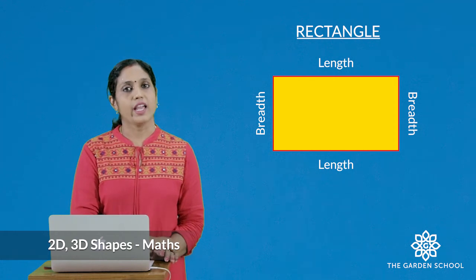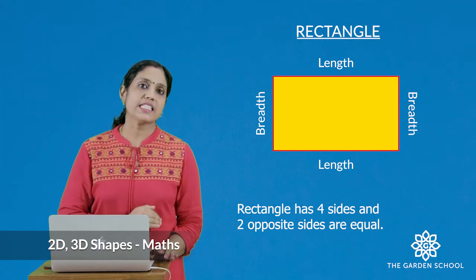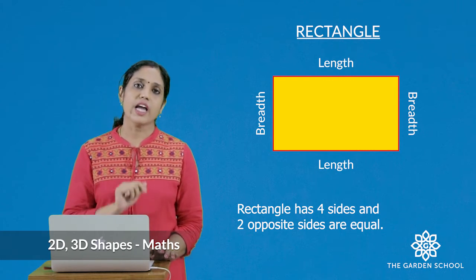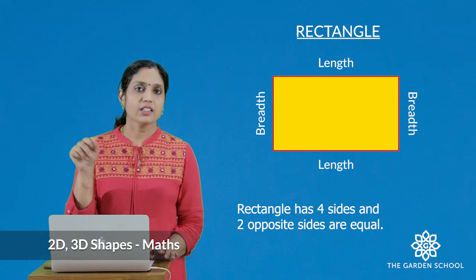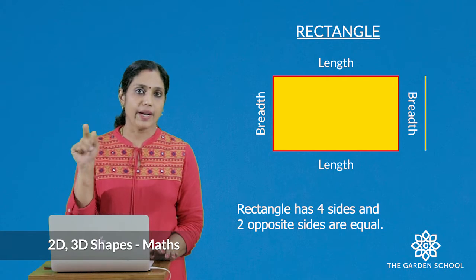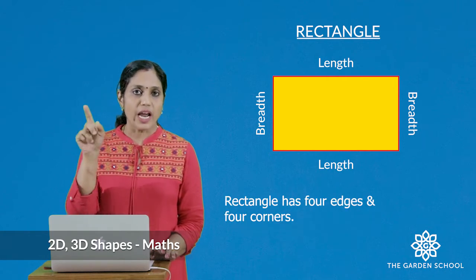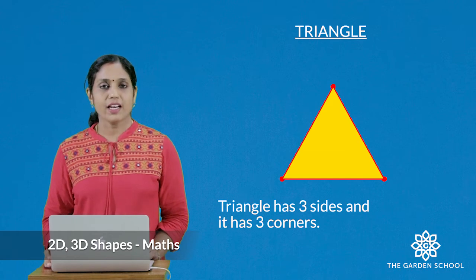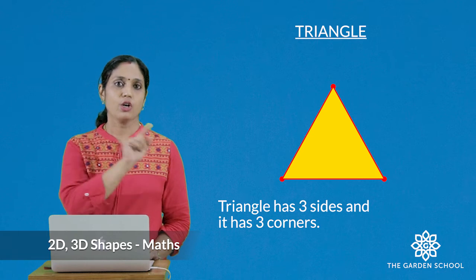Let's go to rectangle. Rectangle again has four sides, but two opposite sides are equal — that is, two sides are longer and two sides are shorter. The longer side is called the length and the shorter side is called the breadth. Like a square, there are four edges and four corners.